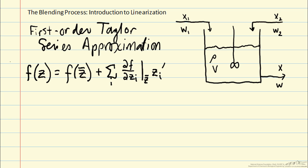If we have a higher-order Taylor series approximation, we'll continue to have zi squared terms, zi cubed terms, but because here we're considering a first-order Taylor series expansion, we stop here and this is only an approximation.